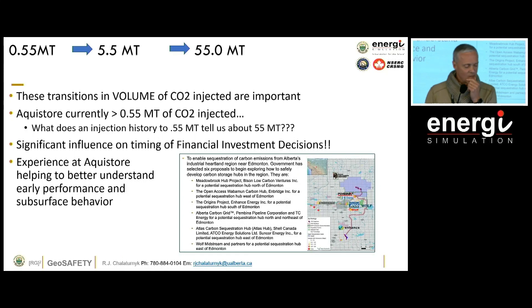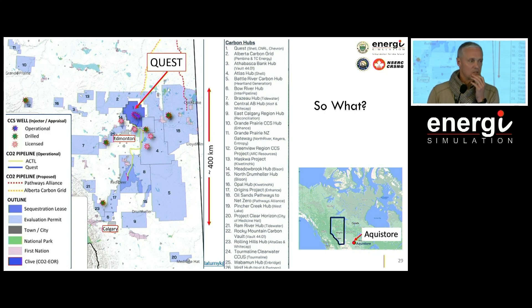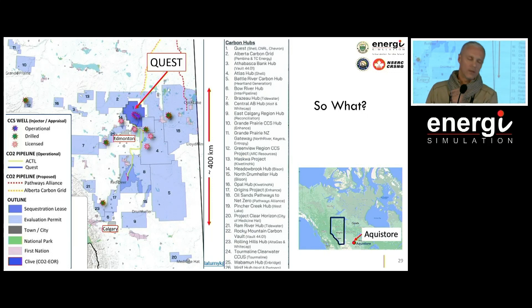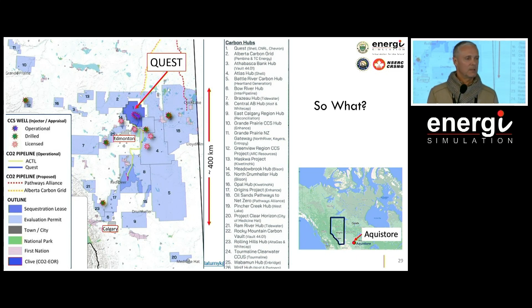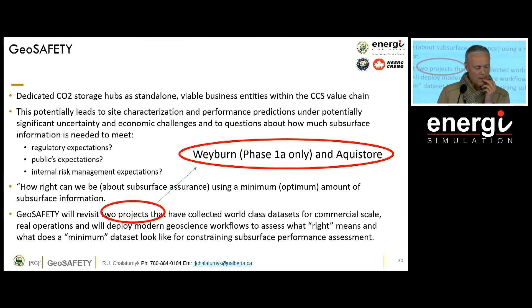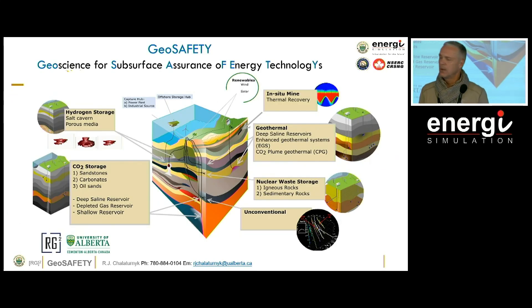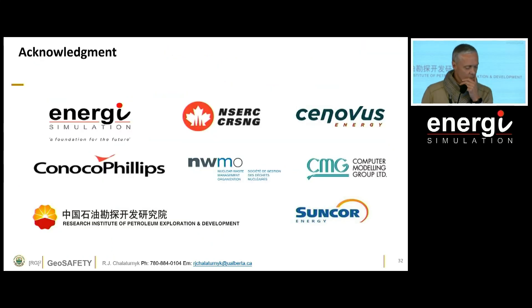There's lots of data, lots to extract. The so-what part is really this: those capacity estimates are right at the core of the business negotiations happening here. And then all the other things we talk about — risk, long-term — is Androcito Storage Incorporated really going to guarantee perfect containment of CO2 in his storage complex so that I, as the emitter, don't have to bear any of that risk? Some things we're going to do in AquaStore in this geosafety initiative: go back, march through time, and figure some things out.